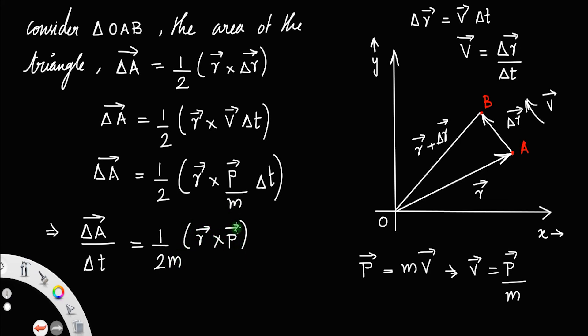And you know, the angular momentum is r cross p. Position vector into position of the particle into linear momentum gives the angular momentum L.